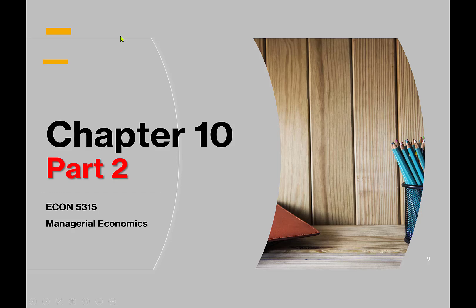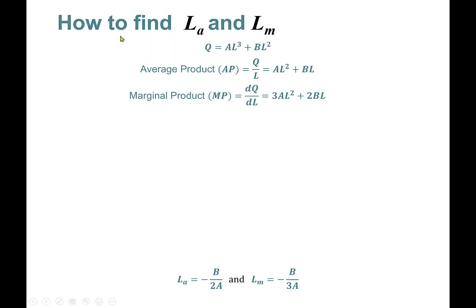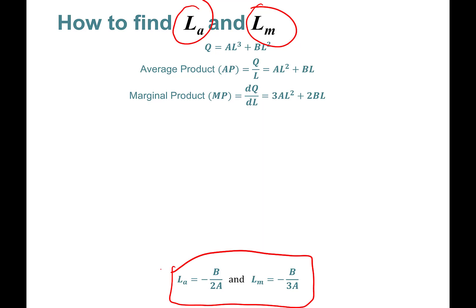Hello everyone, this is Chapter 10 Part 2. In this part we'll learn how to find LA and LM. LA is the point of labor at which average product of labor starts to diminish, and LM is the level of labor beyond which marginal product starts to diminish.